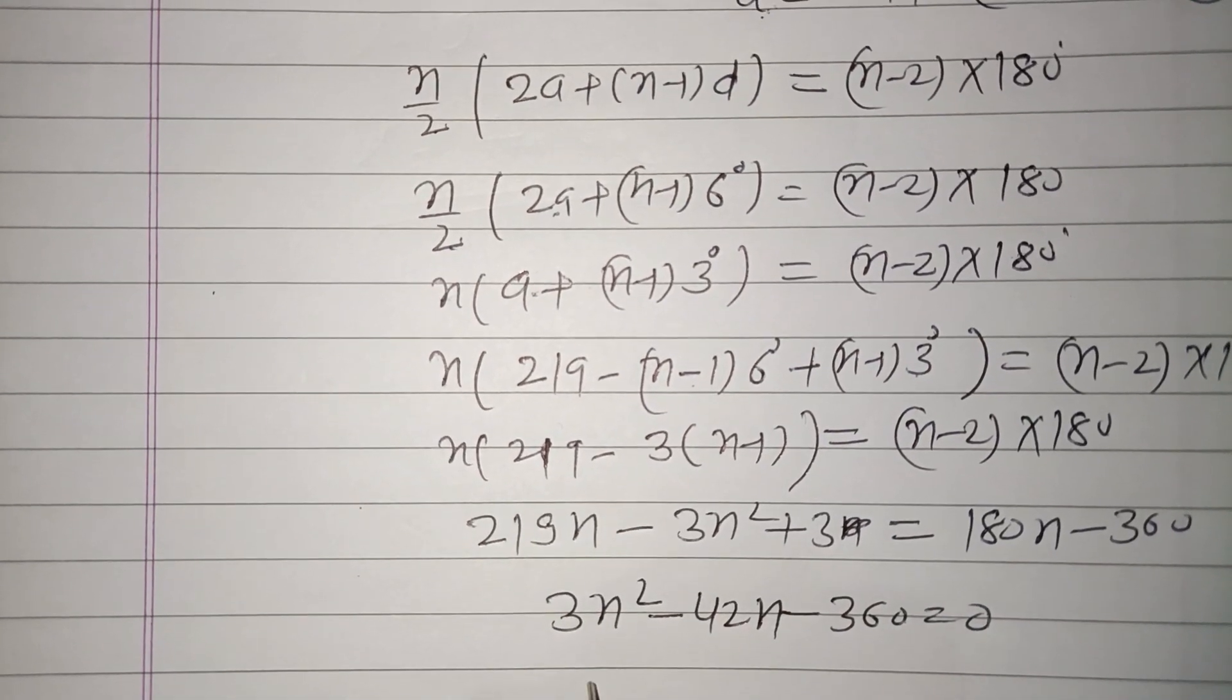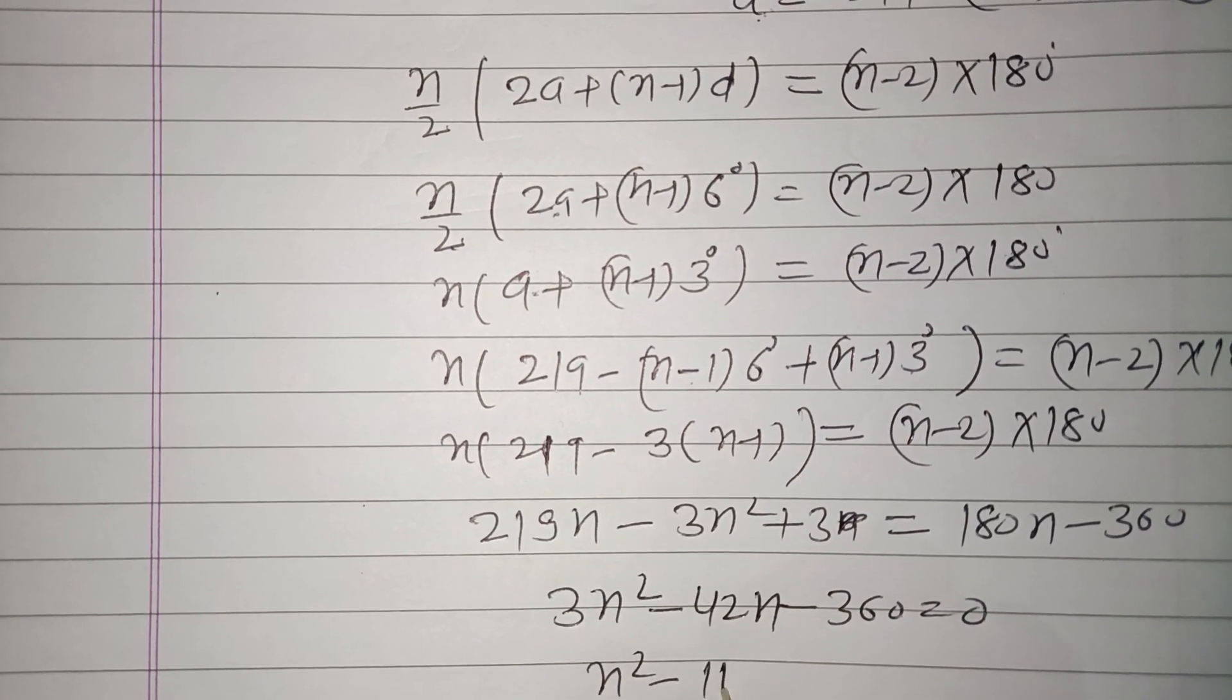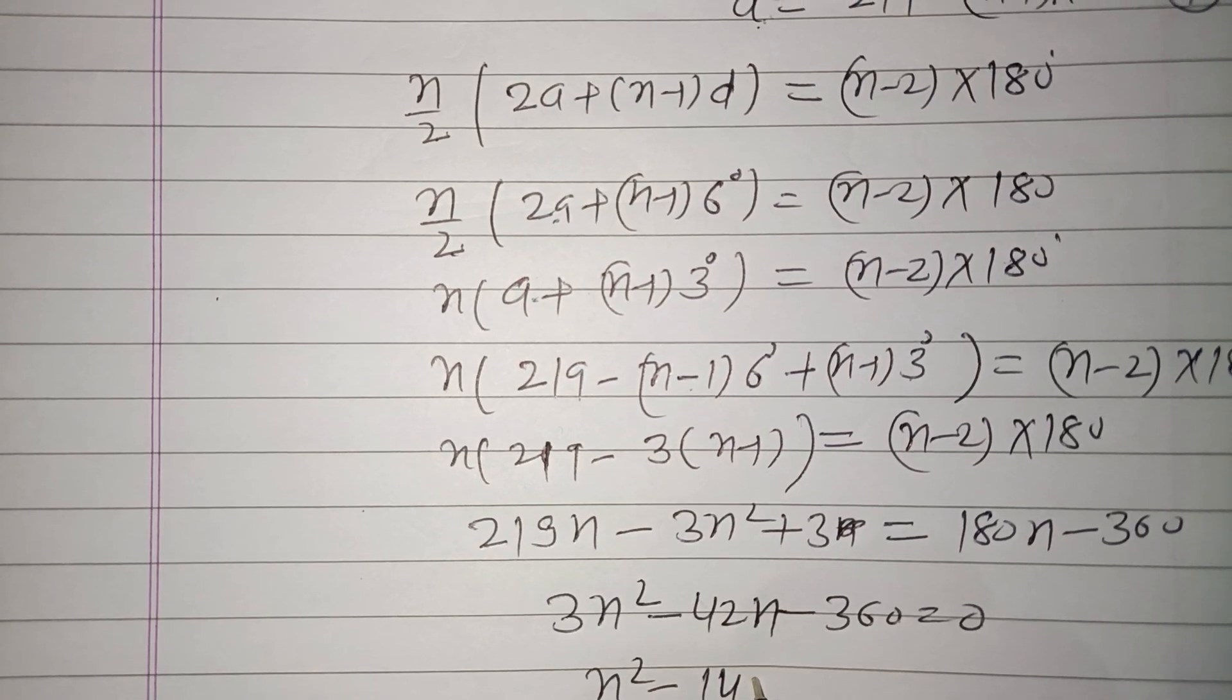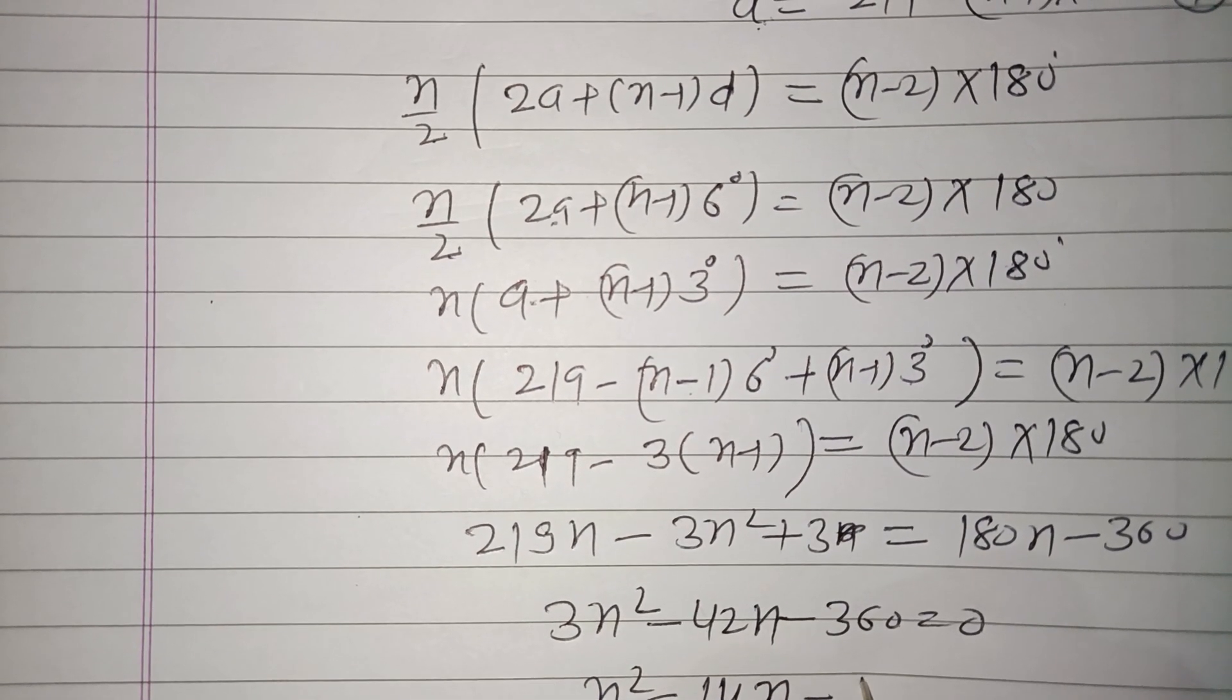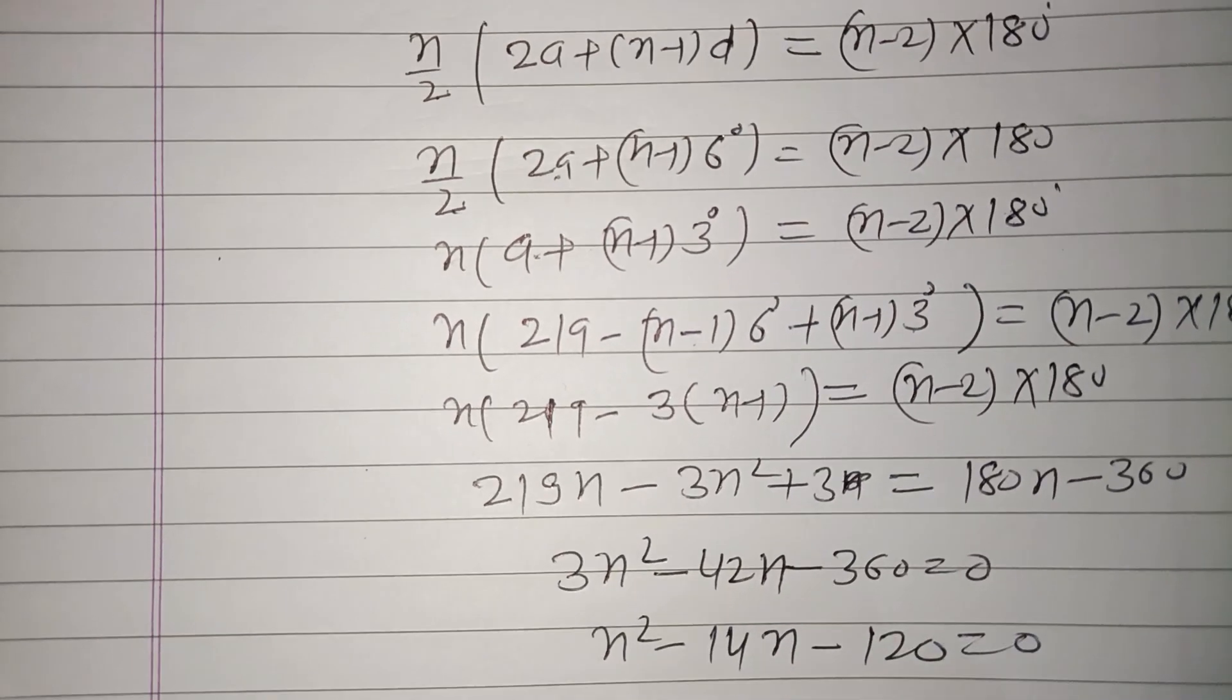Dividing by 3, we get n² minus 14n minus 120 equals 0.